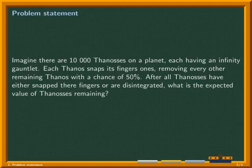Let's consider the following math problem. Imagine there are 10,000 Thanoses on a planet, each having an infinity gauntlet. Each Thanos snaps its fingers once, removing every other remaining Thanos with a chance of 50%. After all Thanoses have either snapped their fingers or are disintegrated, what is the expected value of Thanoses remaining?